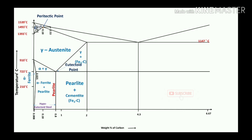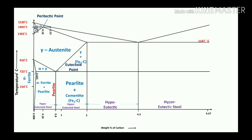Up to 0.8% carbon is represented as hypo-eutectoid steel, and 0.8% to 2% is hyper-eutectoid steel. So up to 2% is steel, and 2% to 6.67% is cast iron.